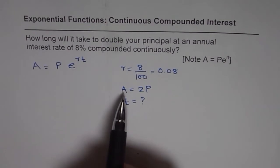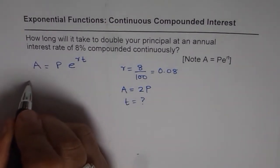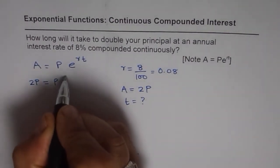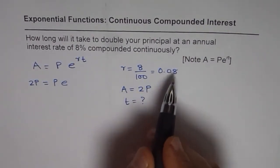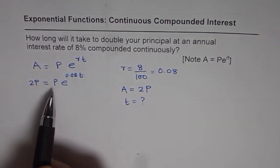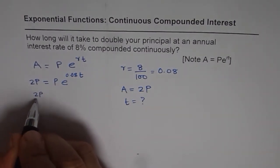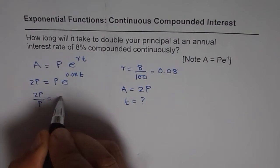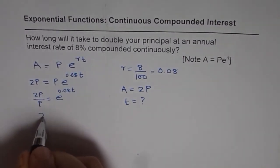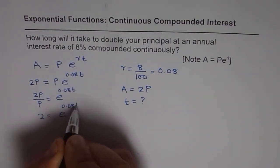Now, applying the formula and substituting A as 2P, we get 2 times P equals P times e to the power of 0.08t. P and P will cancel, so we can write 2P divided by P, which is e to the power of 0.08t. So we get 2 equals e to the power of 0.08t.